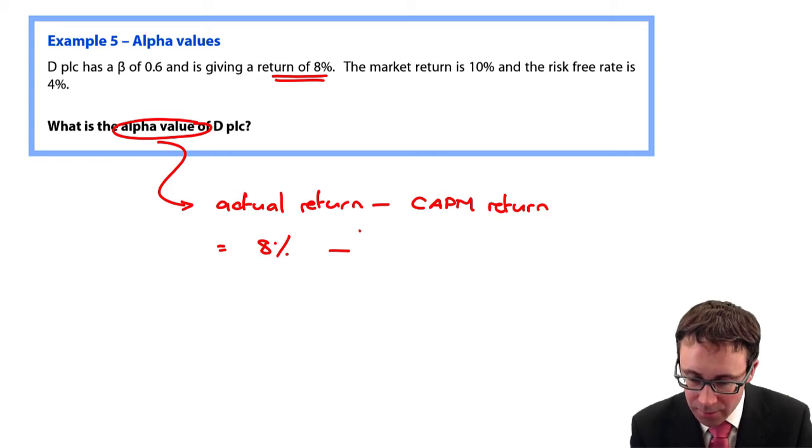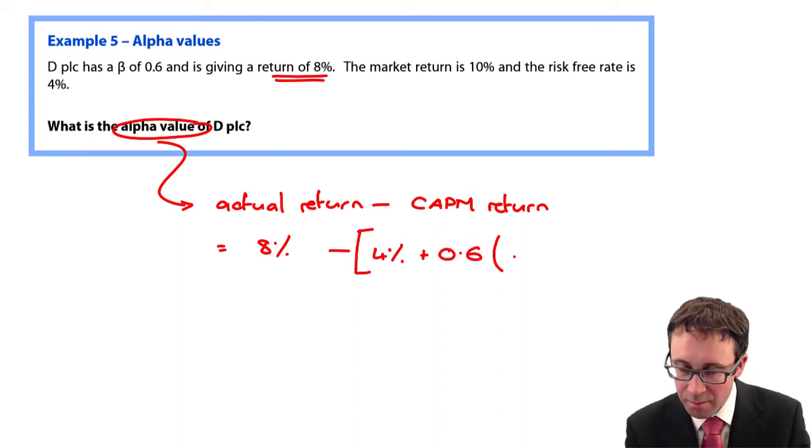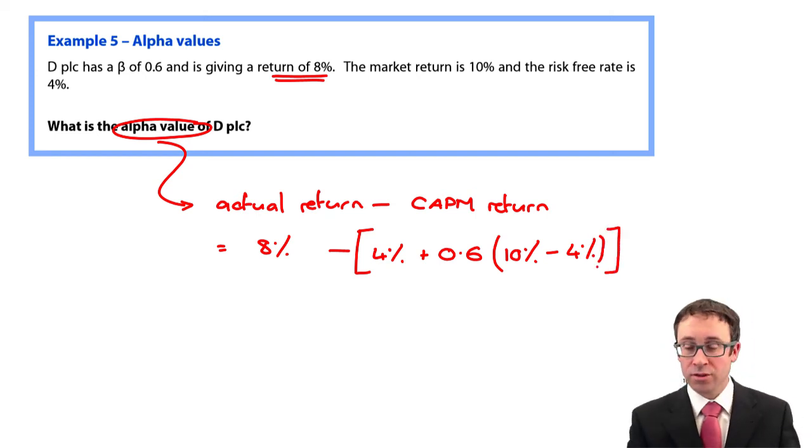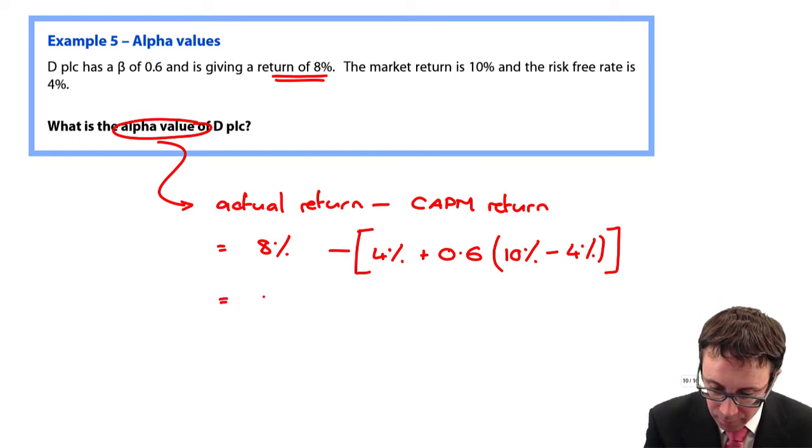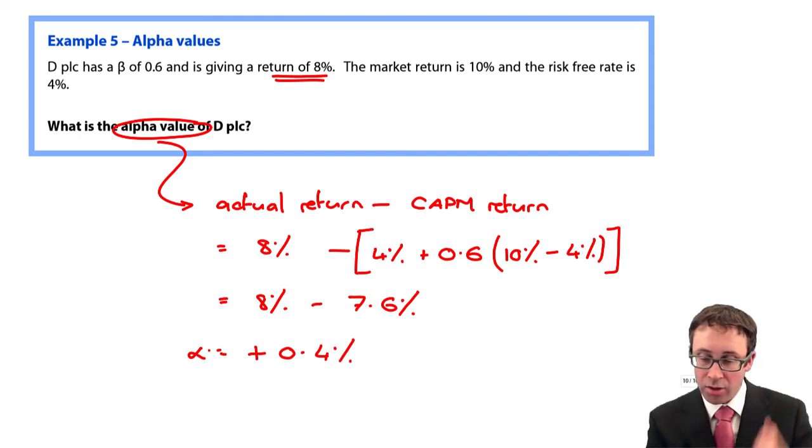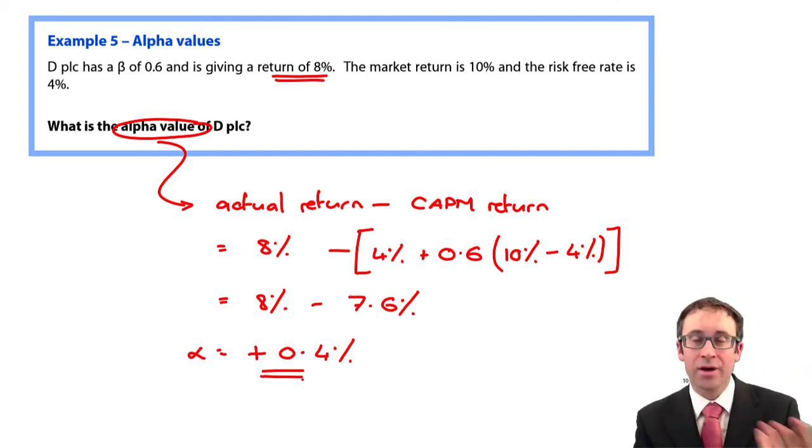So to work out the CAPM return, we take the risk free rate is that 4%. We add on 0.6. So a defensive investment, its beta is less than 1. And the risk premium is 10% less than 4%. So that's 6%. So what we've got there is 8% less than 7.6. So the alpha value is there as positive 0.4. And if it's positive, we're going to go through there and buy that share because what we actually get is higher than what we predict we should get theoretically.